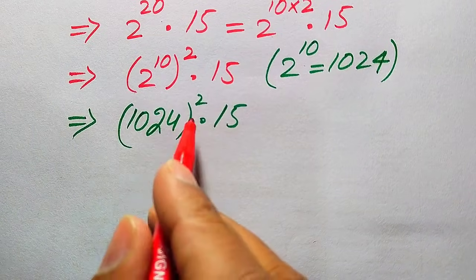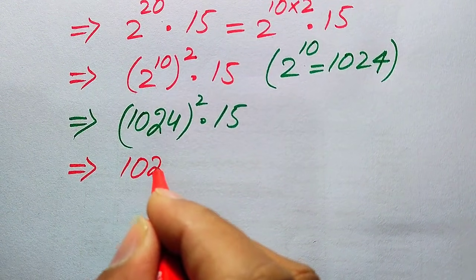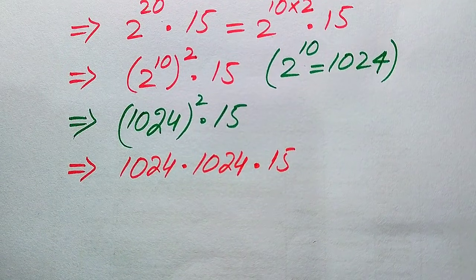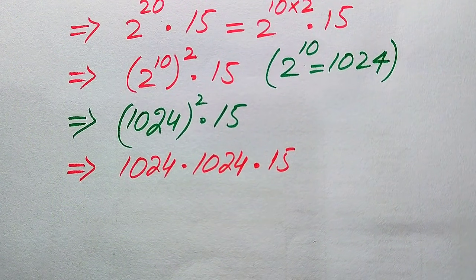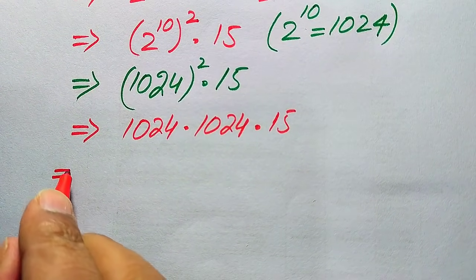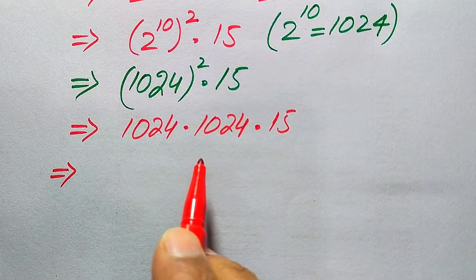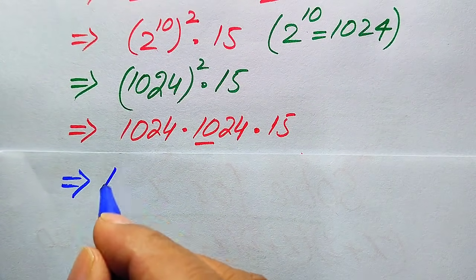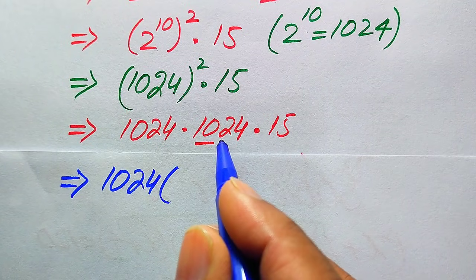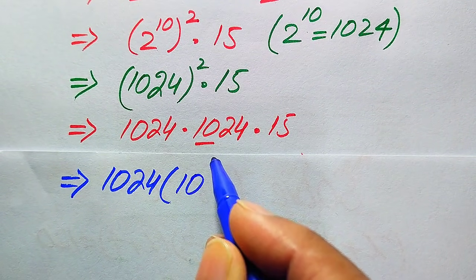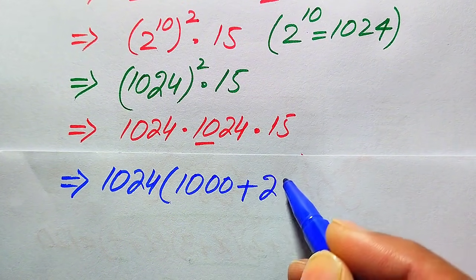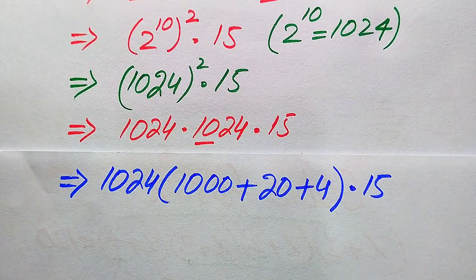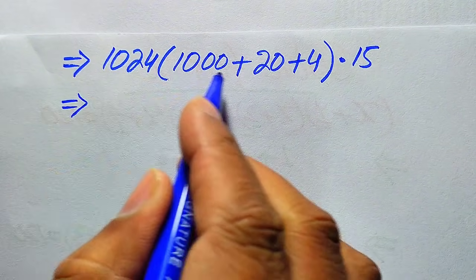1024 squared means 1024 multiplied by 1024, and that result is then multiplied by 15. Since a calculator is not allowed, we use a method to multiply large numbers easily. We rewrite 1024 as 1000 plus 20 plus 4, and multiply each part by 1024, with the result still multiplied by 15.